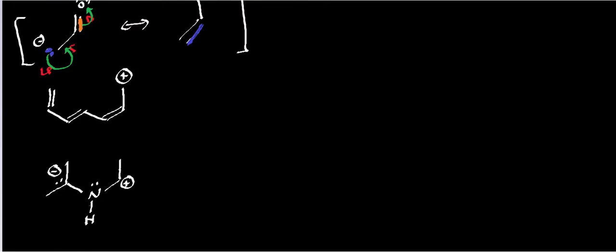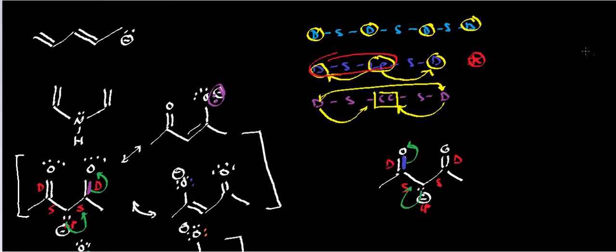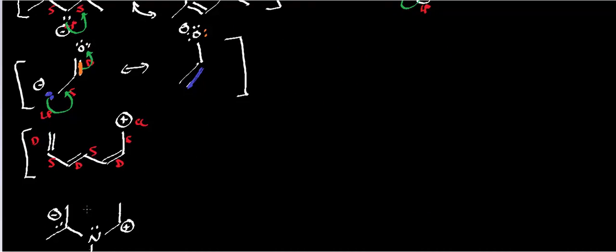Now we're going to switch gears and deal with a harder problem — when we have a carbocation. So here's a carbocation. Let's label this compound: double, single, double, single, double, single carbocation. If I extend this pattern — double, single, double, single, double, single carbocation — that's exactly what this compound is, meaning this whole thing is a system of resonance.